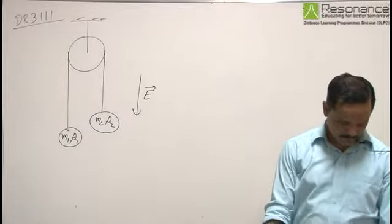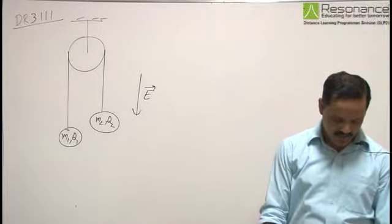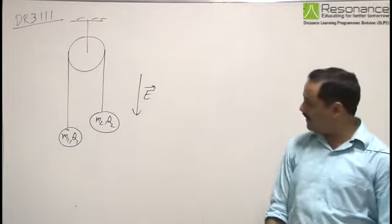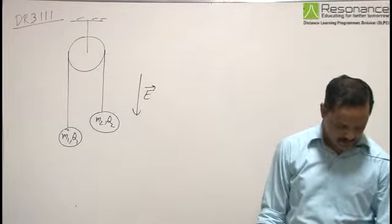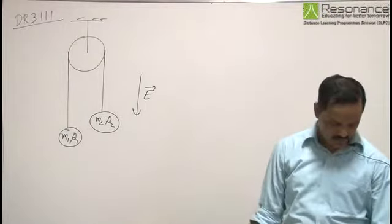The question says, there are two small balls of masses M1 and M2 and having charges Q1 and Q2 and are connected by a string which passes over a fixed pulley.